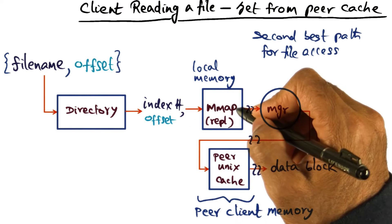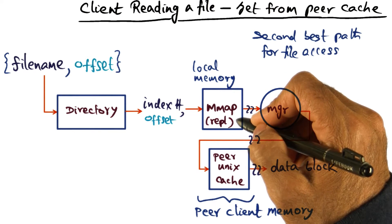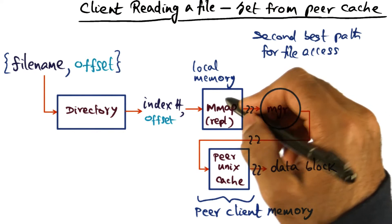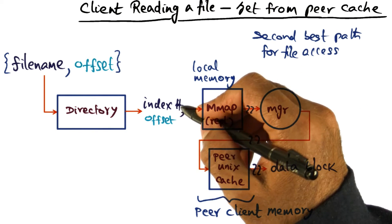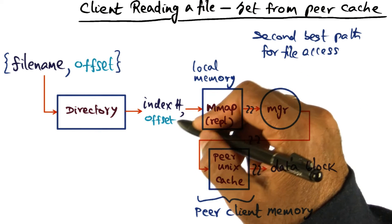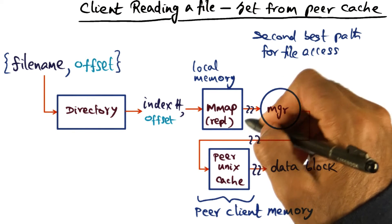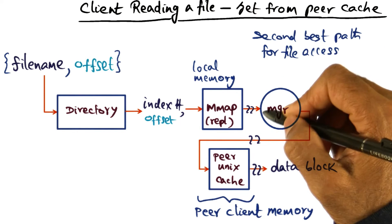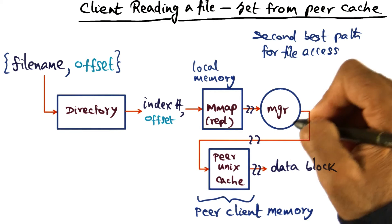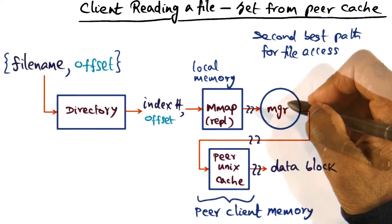If you have to go to the manager node in order to get a copy of the file, this is where the manager map data structure, which is a replicated data structure, is available in the memory of every client. Given the index number and the offset, I can look up the manager map data structure, and that tells me who is the manager I have to contact to get this particular file.